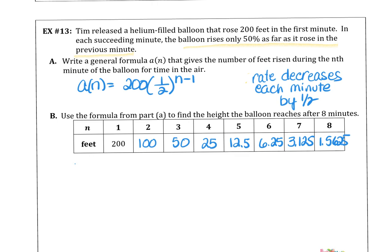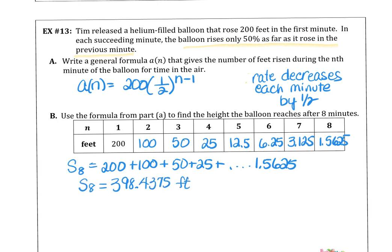We want to use the formula in part A to find the height it reaches after 8 minutes. So that sounds like we need to add up those 8 terms, which would be 200, 100, 50, 25, and so forth, all the way down to 1.5625. If you have your calculator handy, you can add those up with me, and I believe I get 398.4375 feet. So in 8 seconds, the balloon has reached 398.4375 feet.